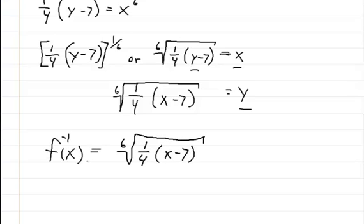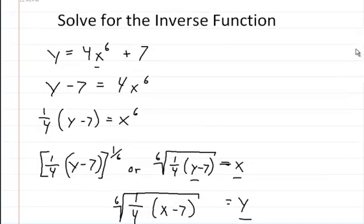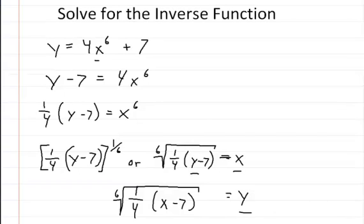And that is the inverse of our original equation. That's the inverse of y equals 4x to the 6th plus 7. That's the inverse, and that's how you would solve that.